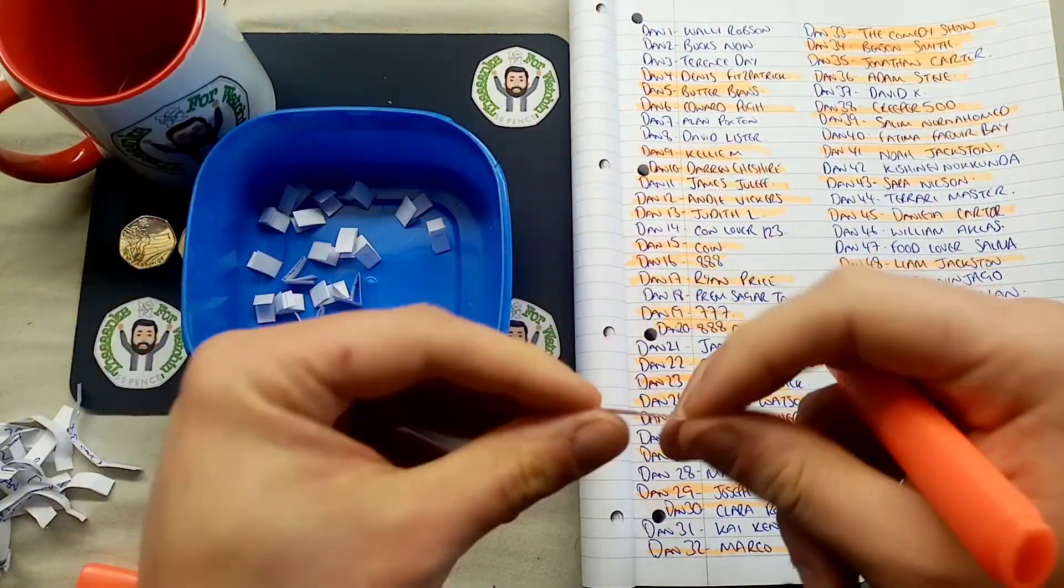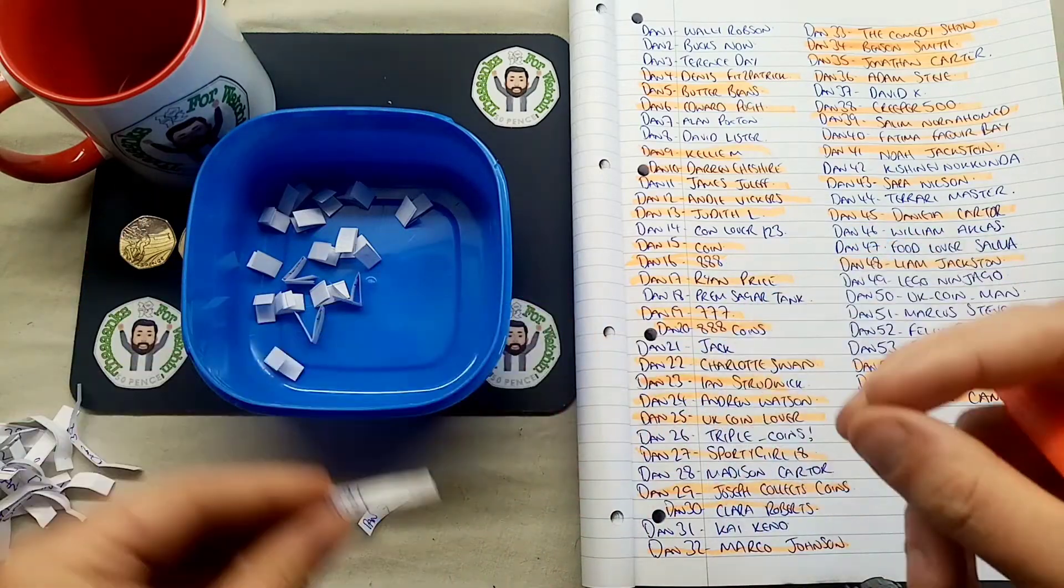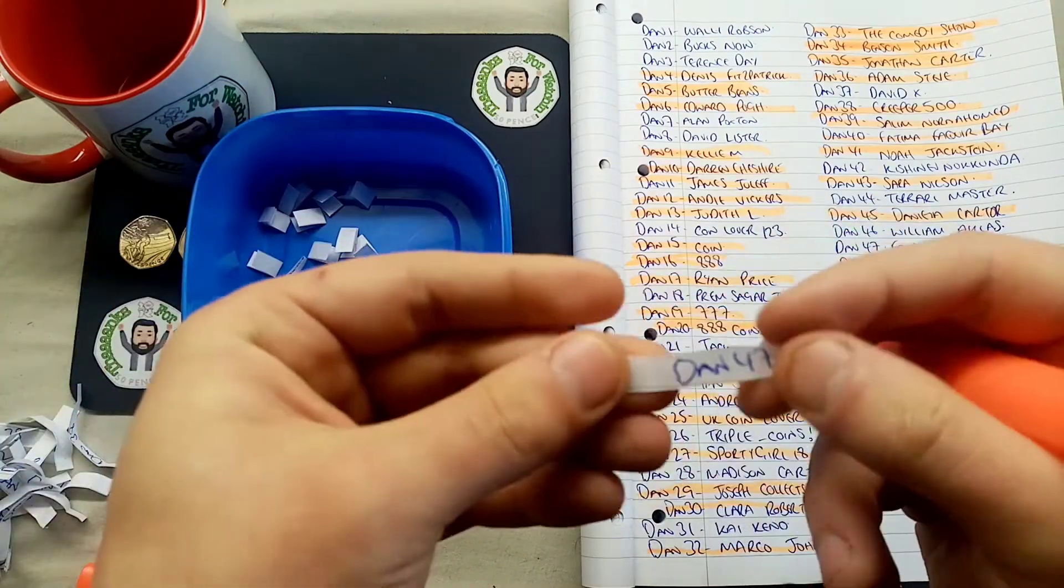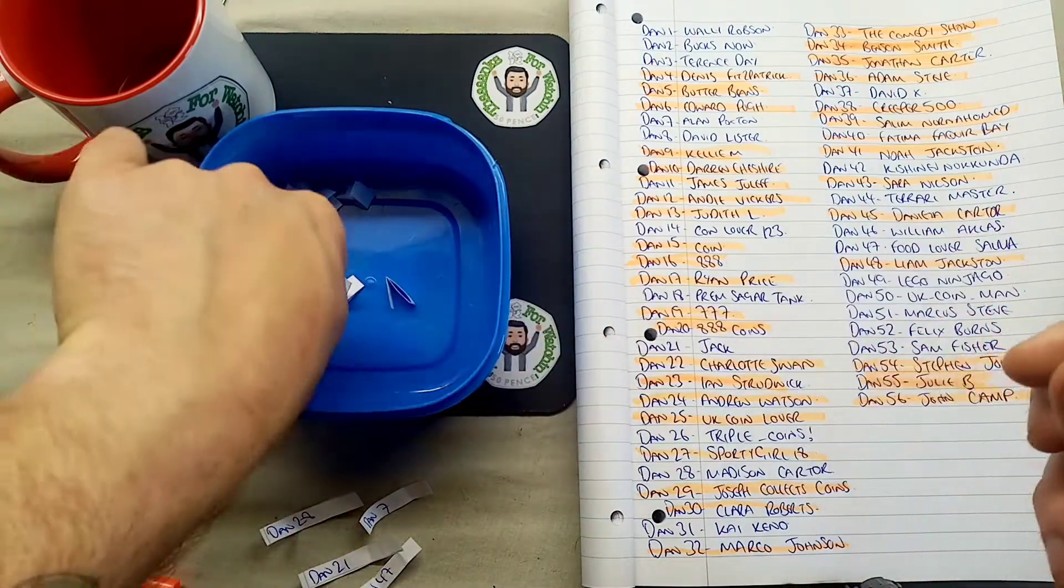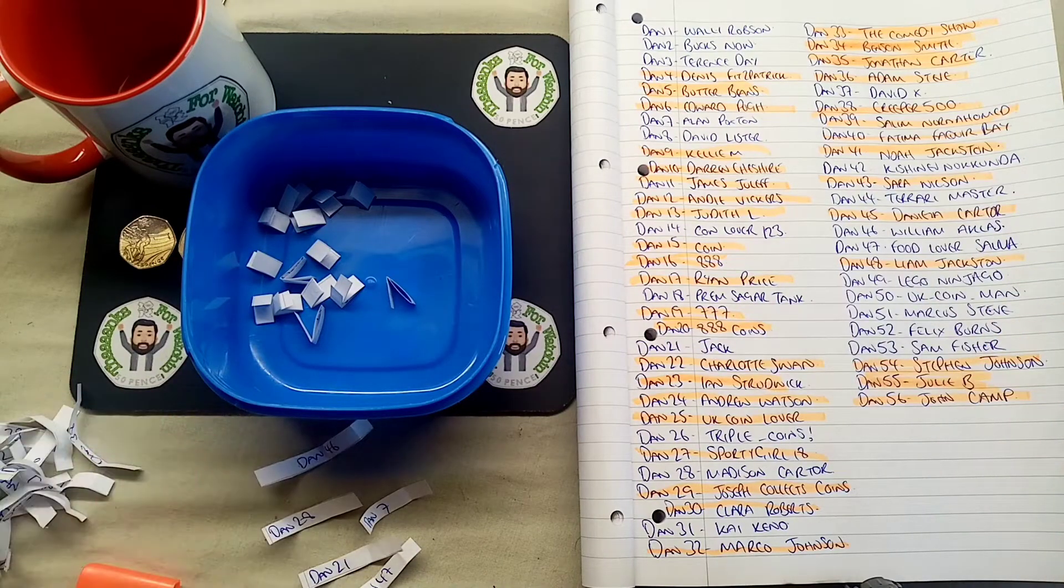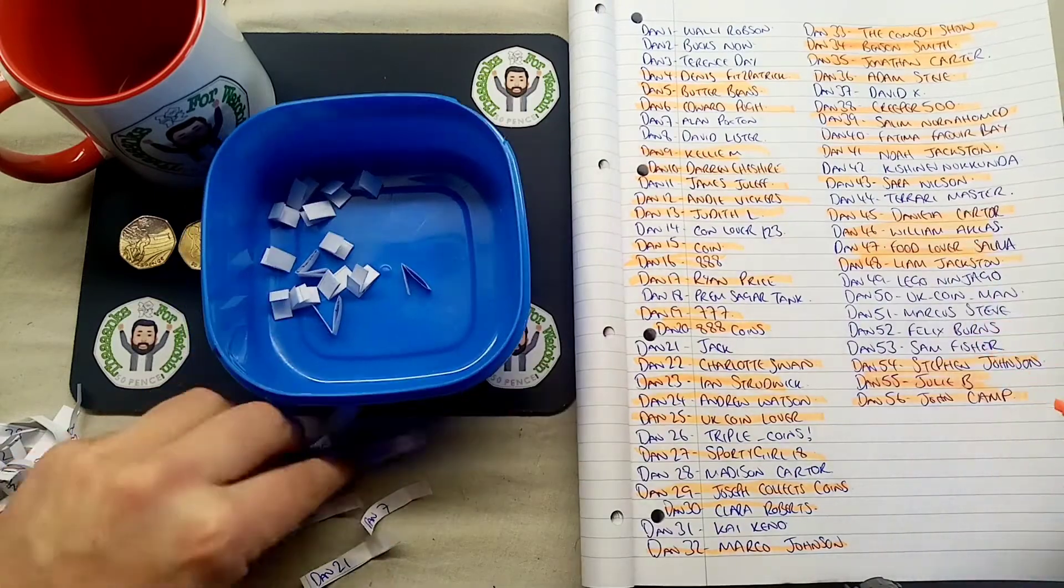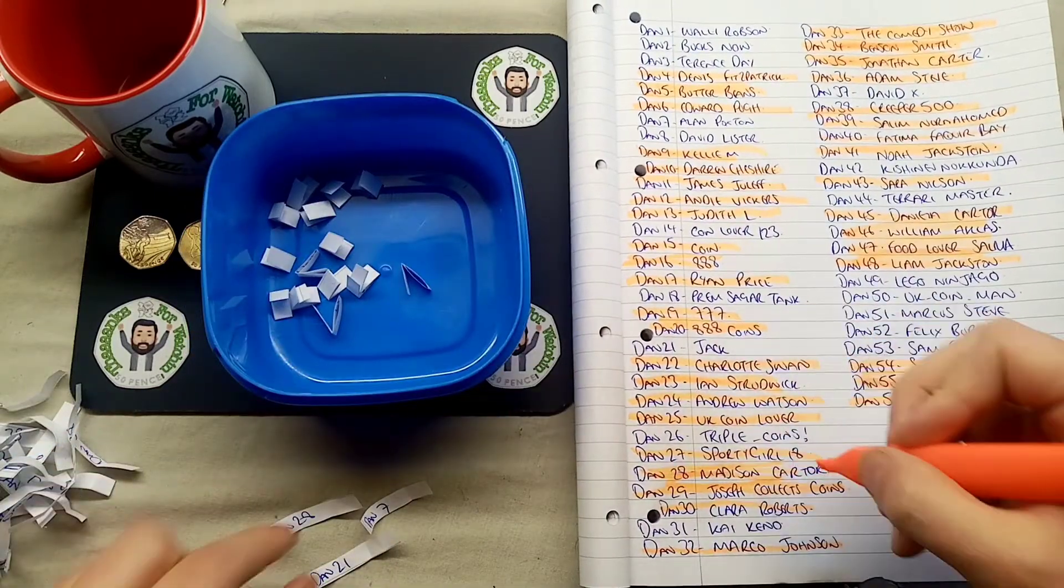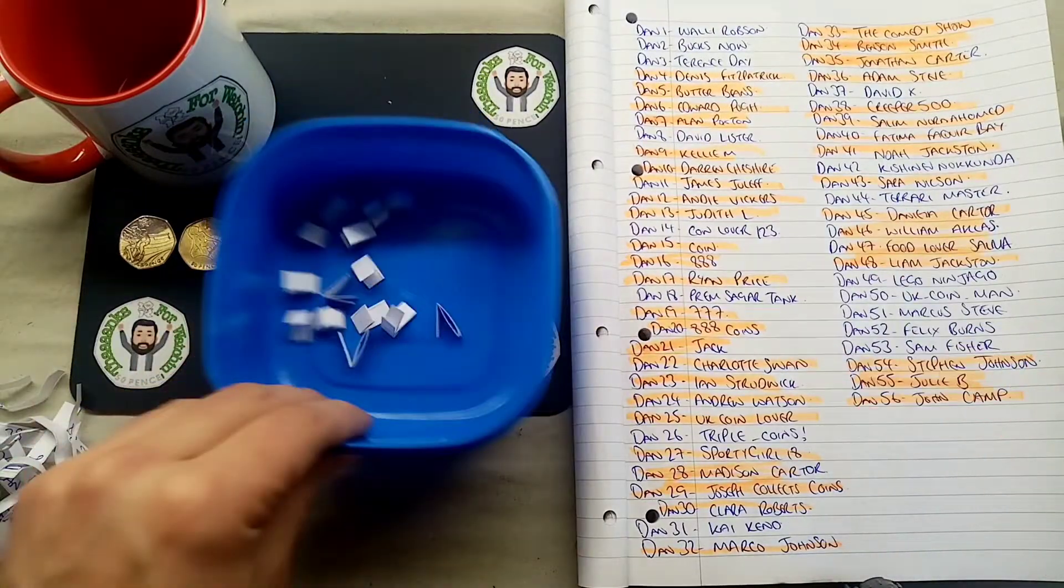Moving on now to those business rounds. There's not many names left in here now. We've got Dan number seven. That's Alan Poxton. Dan 21 is up next. That's Jack. Dan 47 is followed by 28. And the final one in this round then is 46. I think there's only maybe 15 names left now in the bowl. A few out in that round then which I haven't already said. We've got Food Lover with Salma. William Ackless. And also Alan Poxton.